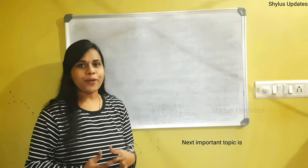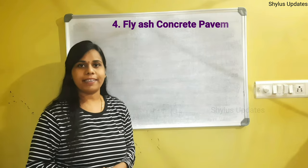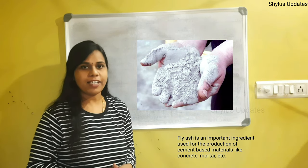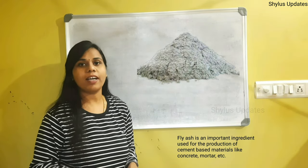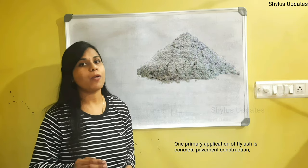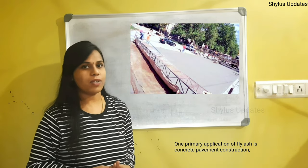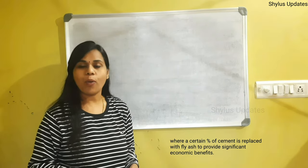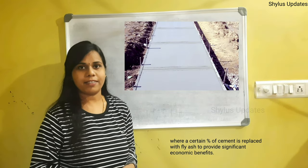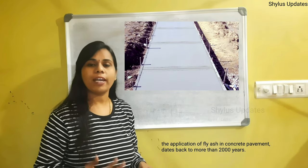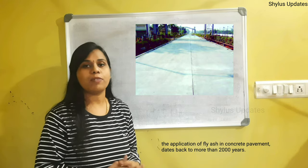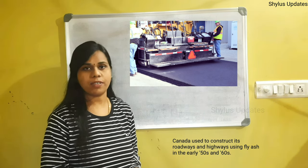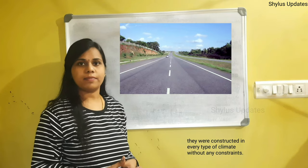The next important topic is fly ash concrete pavement. Fly ash is an important ingredient used for the production of cement-based materials like concrete, mortar, etc. One primary application of fly ash is concrete pavement construction, where a certain percentage of cement is replaced with fly ash to provide significant economic benefits. The application of fly ash in concrete pavement dates back more than 2000 years. Canada used to construct its roadways and highways using fly ash in the early 50s and 60s, and they were constructed in every type of climate without any constraints.